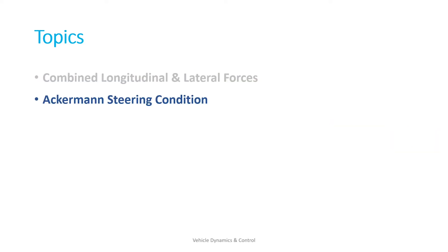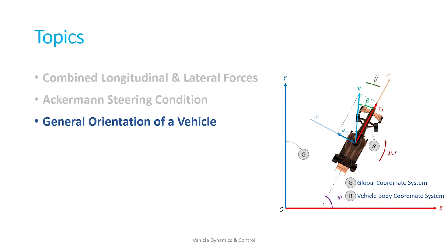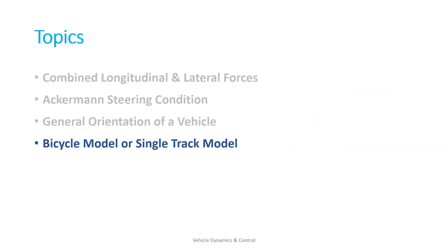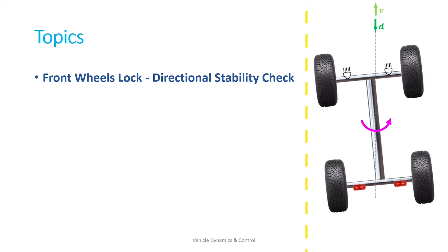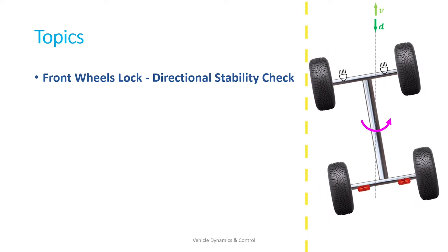Then we will look into Ackermann steering condition and general orientation of a vehicle, and then the bicycle model or single track model — both kinetic and kinematic bicycle models. Before going to the vehicle dynamics control part, we will see what happens to the directional stability of the vehicle if the front wheels are locked. When a disturbance yaw moment acts, how the vehicle is going to behave — we will see that in detail with animations.